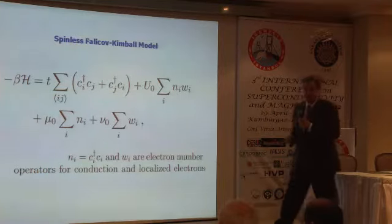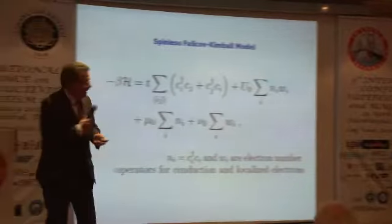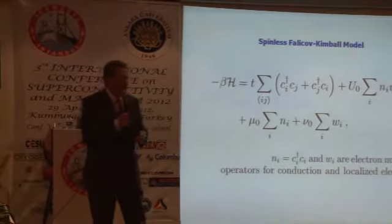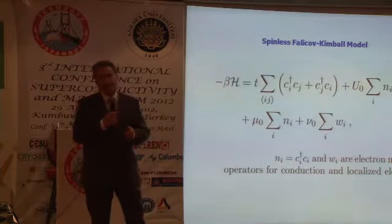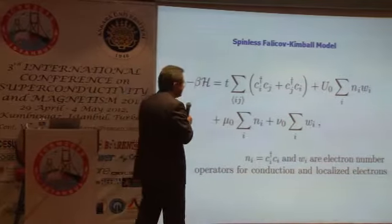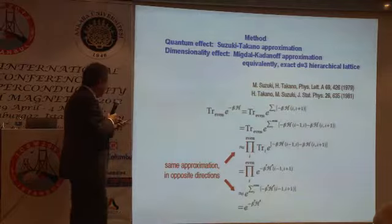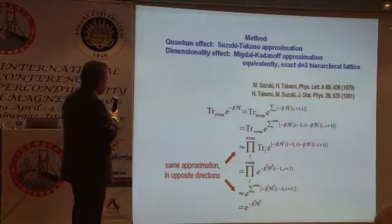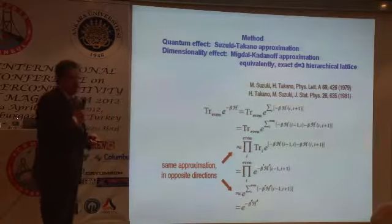We have done an approximate solution using renormalization group theory. The way you do this: you cannot solve this exactly, and there are two difficulties. One is quantum mechanics, and the other is the high dimensionality. For each one of them there are well-tested approximations. For the quantum effect, we use the Suzuki-Takano approximation, and for the dimensionality effect we use the Migdal-Kadanoff approximation.